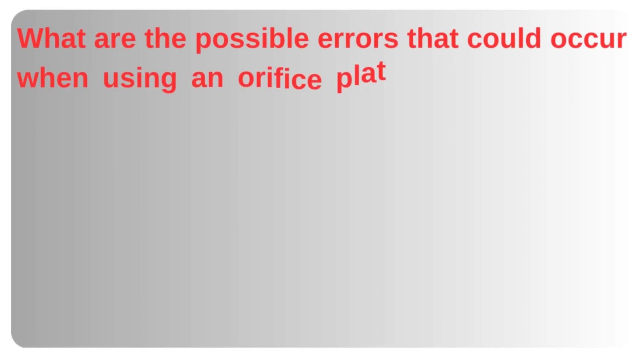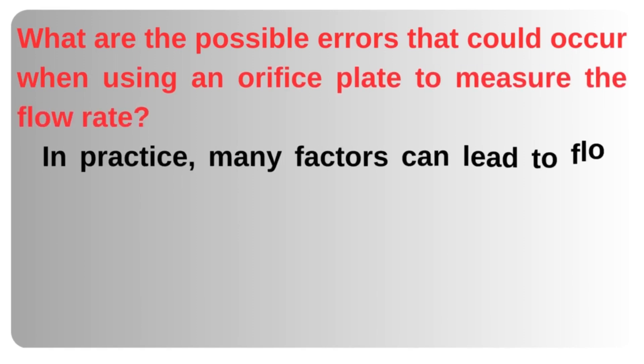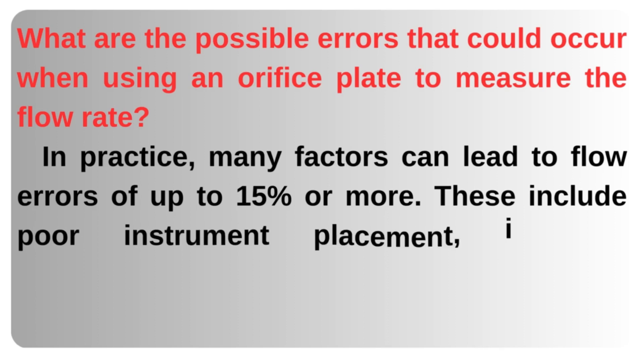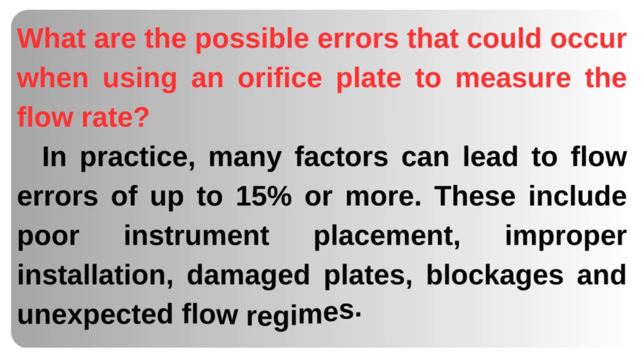What are the possible errors that could occur when using an orifice plate to measure the flow rate? In practice, many factors can lead to flow errors of up to 15% or more. These include poor instrument placement, improper installation, damaged plates, blockages, and unexpected flow regimes.